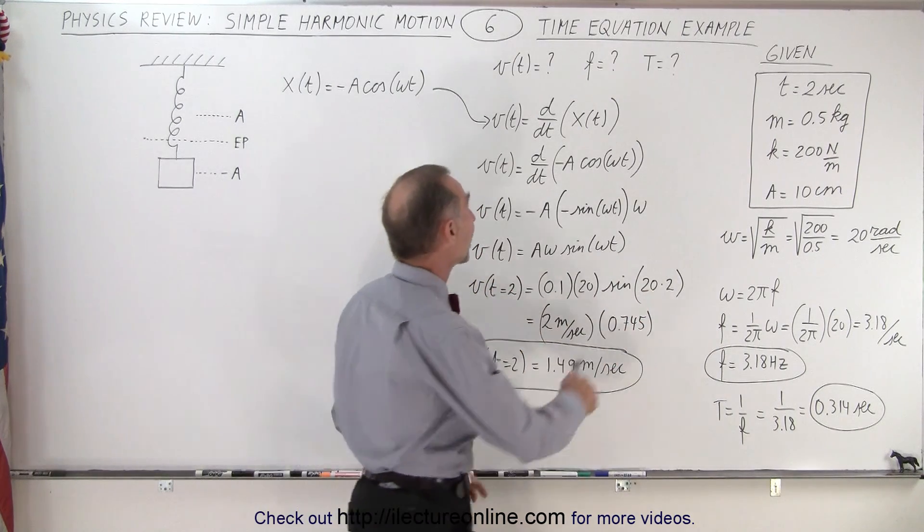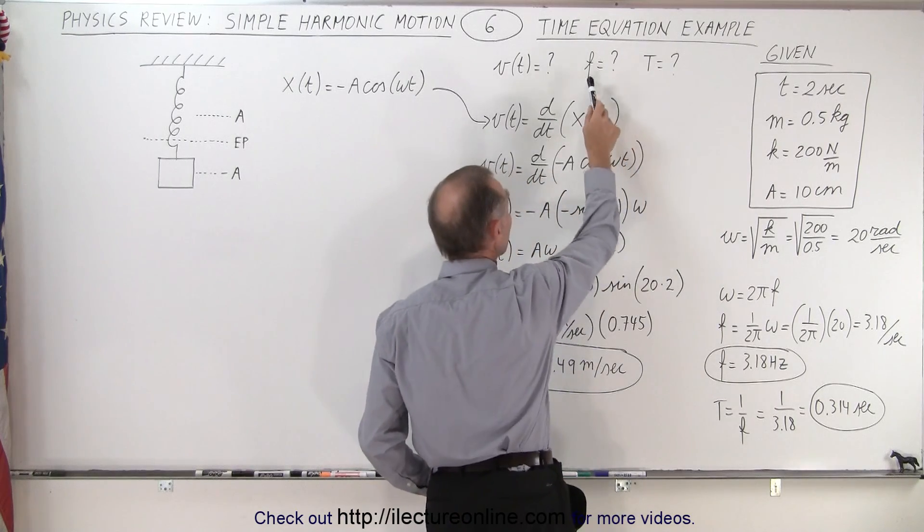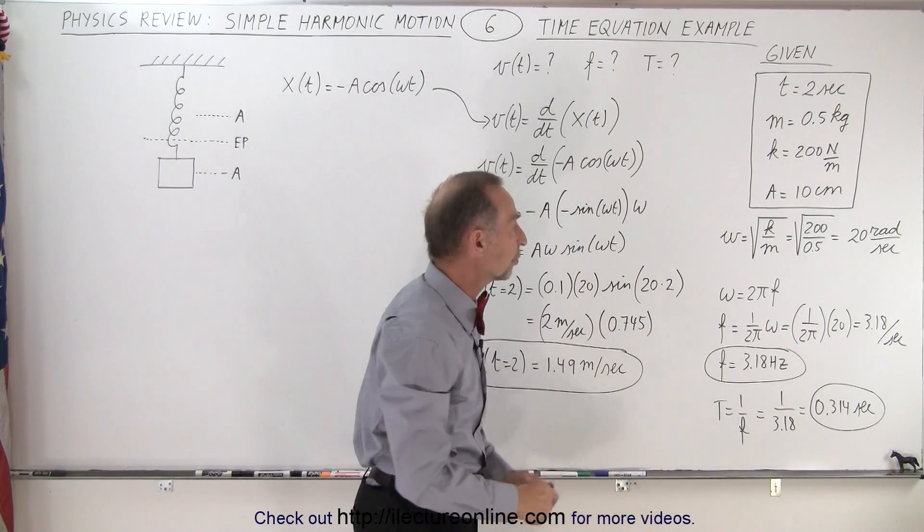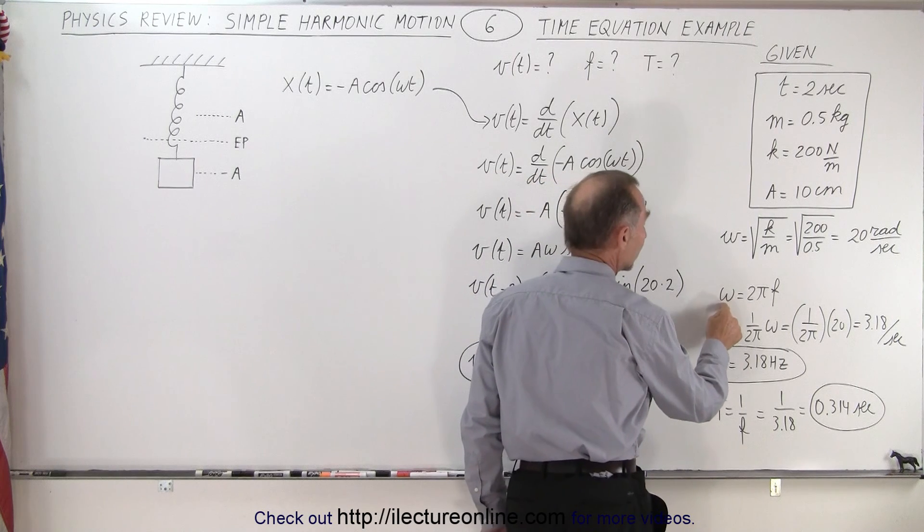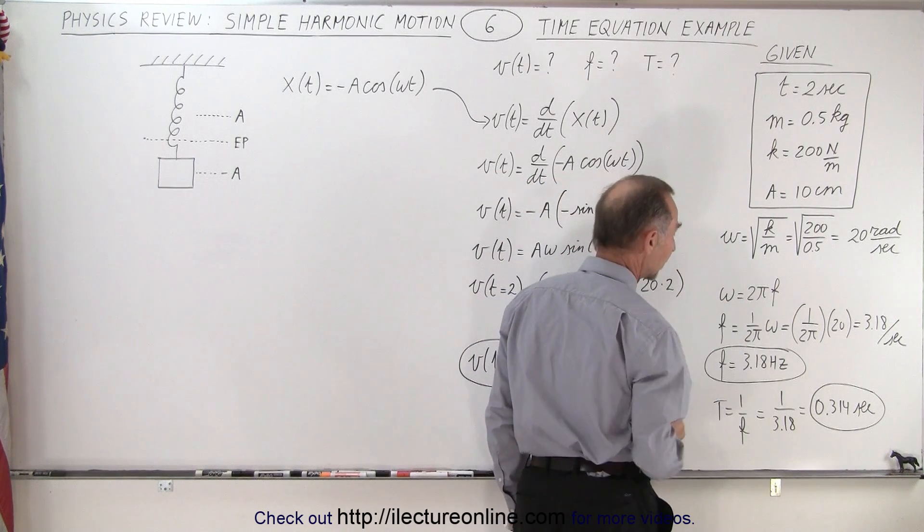We're also supposed to find the frequency and the period. Now this is the oscillation frequency. So there's a relation between the radial frequency and the oscillation frequency.